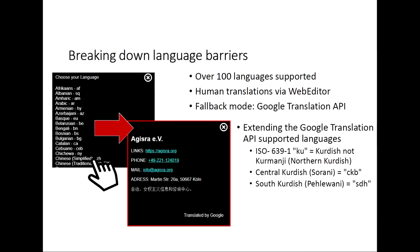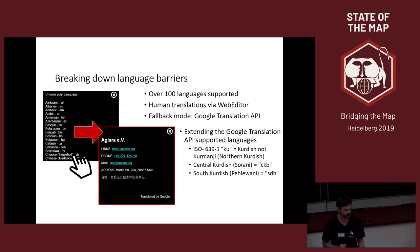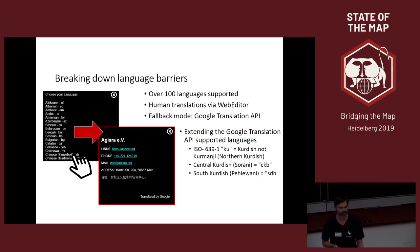That brings us to the next point: language barriers. Over 100 languages are supported, and whenever possible, human translation is used. You can do them with the web editor. As a fallback mode, we have the Google Translation API. Unfortunately there was no open source alternative, especially for languages in areas of conflict from the Middle East. These language lists were even extended. In the ISO standard, KU stands for Kurdish, which is a meta language, not Kurmanji as Google uses. The two other main Kurdish languages, Central Kurdish Sorani and South Kurdish Pehlewani, were added. You can do translation of these languages, but you cannot map originally in these languages because there's no fallback mode available.